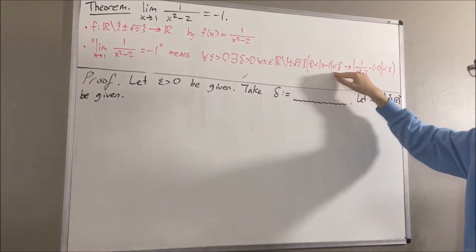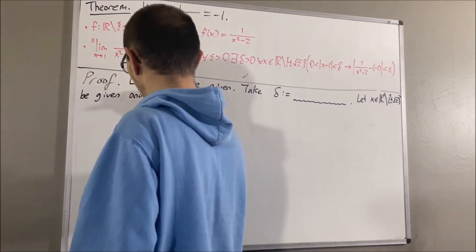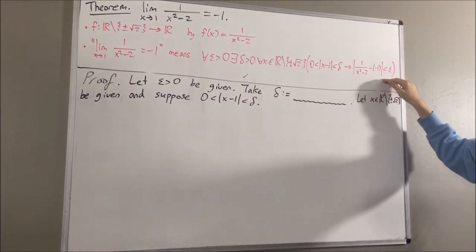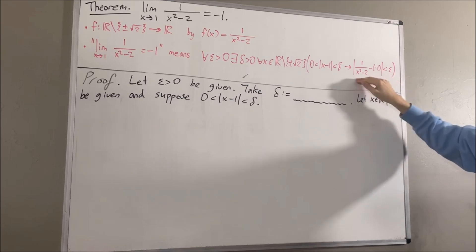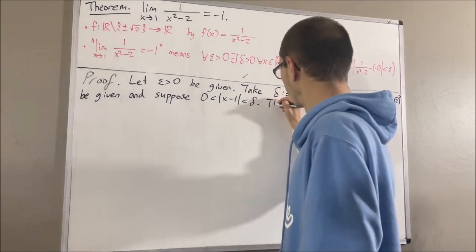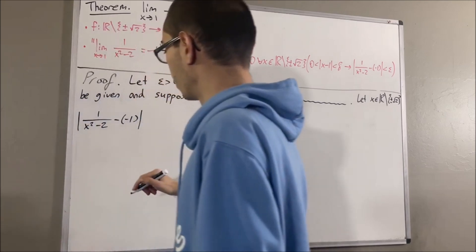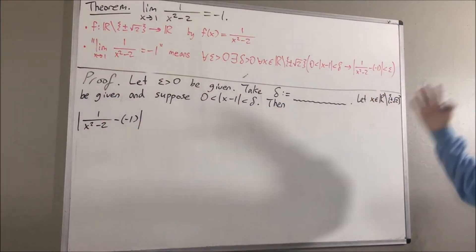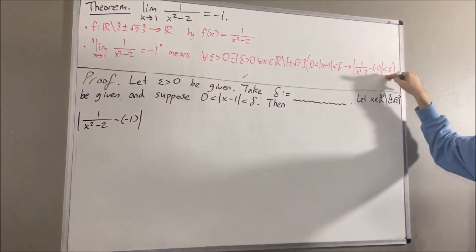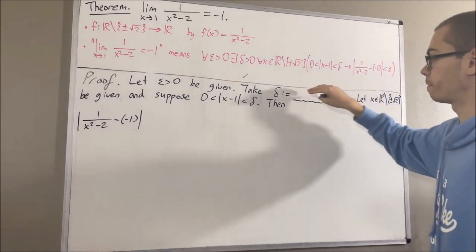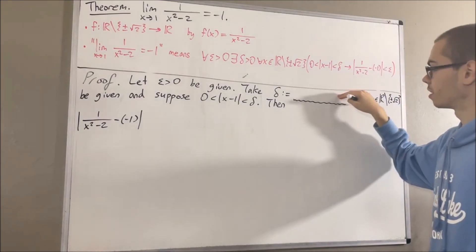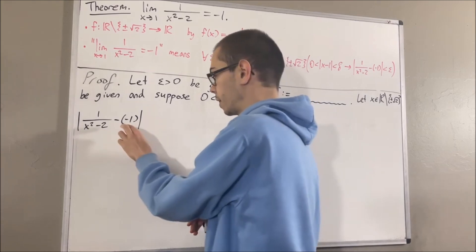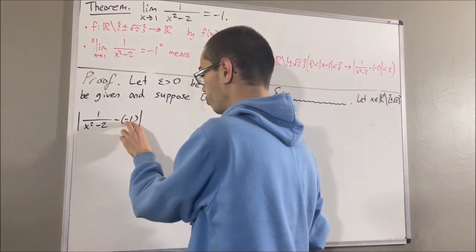Let's suppose that 0 is less than the absolute value of x minus 1 is less than delta is true. From here, we want to show that the inequality for the function value is true. So let me start off by writing the left-hand side of this inequality — we want to make this less than epsilon, and in the process we're going to figure out what we should define delta to be. Combining the two negatives together, we really get plus 1.